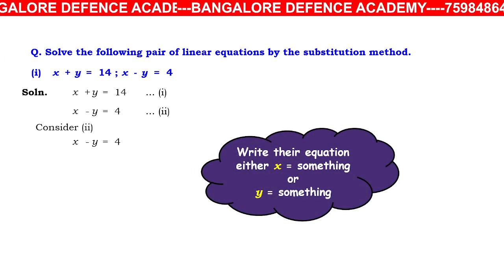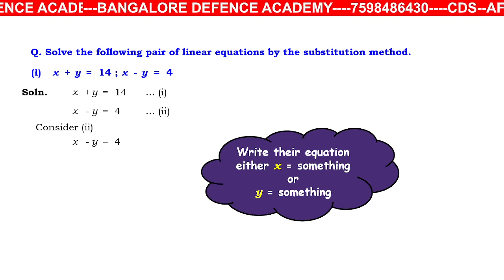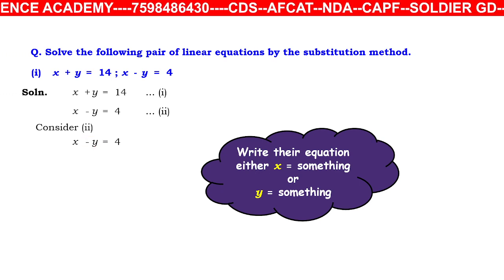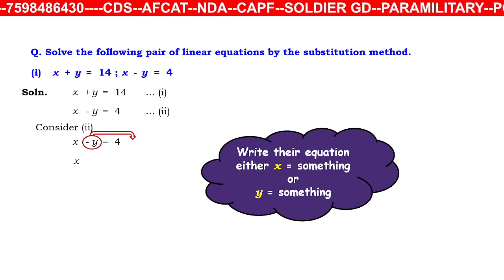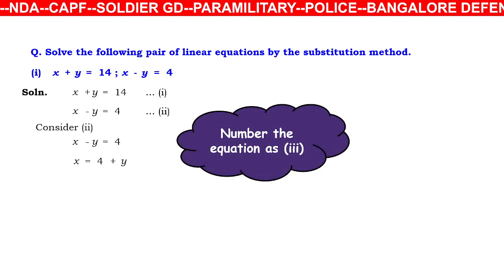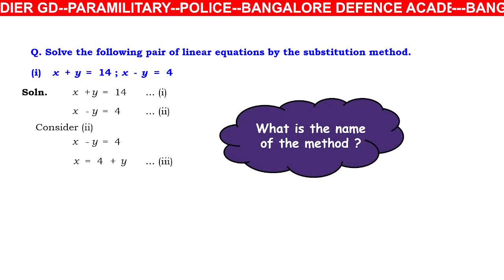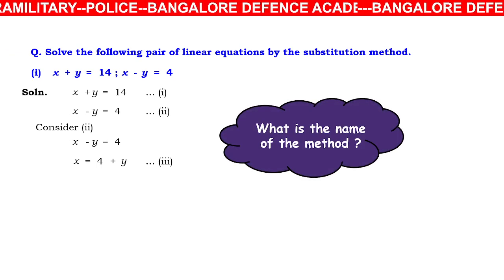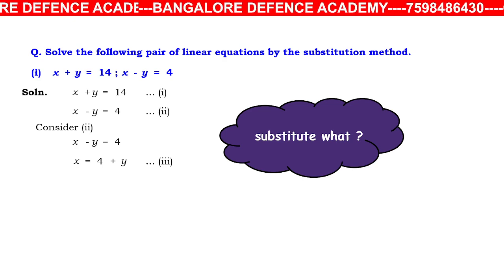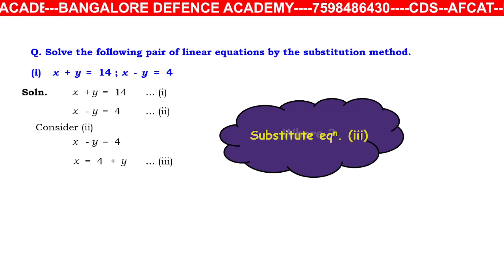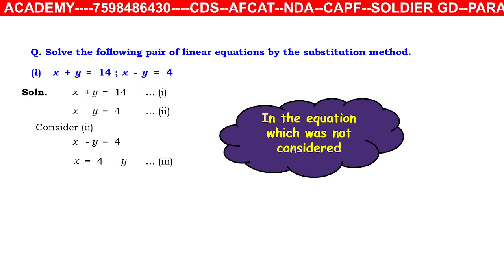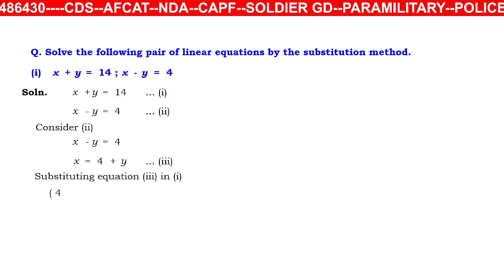From equation 2, taking −y to the right-hand side: x = 4 + y — call this equation 3. In the substitution method, we substitute equation 3 into the equation which was not considered — that is equation 1.